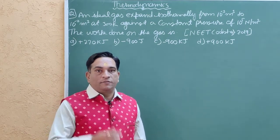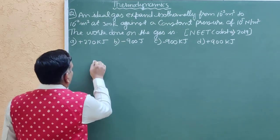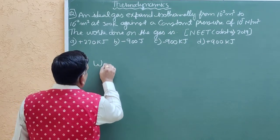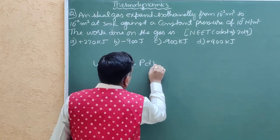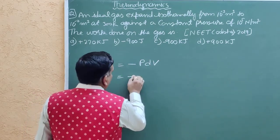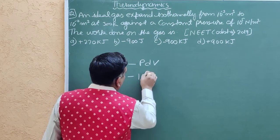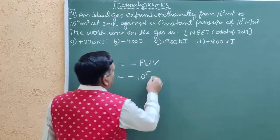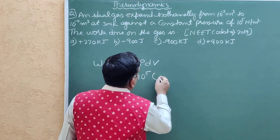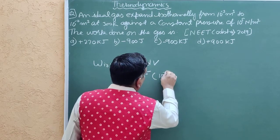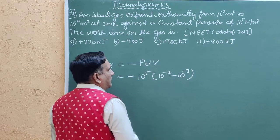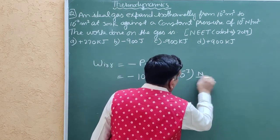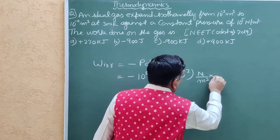So here we can write work equals minus PΔV. Pressure 10^5 Newton per meter square, volume initial 10^-2 minus 10^-3 Newton per meter square.